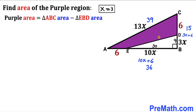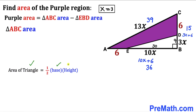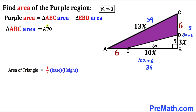The area of the purple shaded region equals the area of the bigger triangle ABC minus the area of the smaller triangle EBD. Using the area formula: area equals one-half times base times height. For triangle ABC, the base is 36 and the height is 15, so the area is one-half times 36 times 15, which gives us 270 square units.